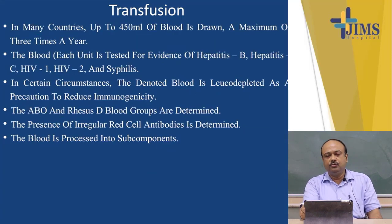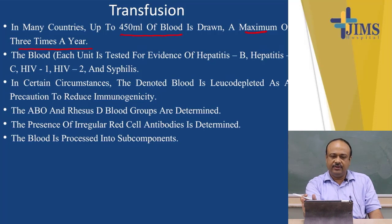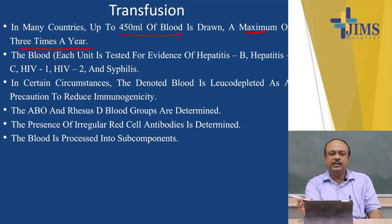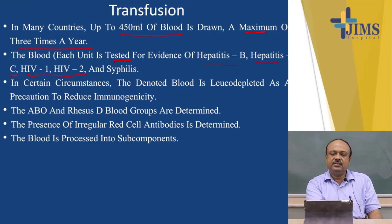In many countries, up to 450 ml of blood is drawn, a maximum of up to three times a year, to keep blood banks ready for any emergency or non-emergent conditions. Each blood unit is tested for evidence of certain diseases — important among which are Hepatitis B, Hepatitis C, both blood-borne, HIV 1 and 2, syphilis, and also malaria. These are the basic tests done before donated blood is transfused to the recipient.